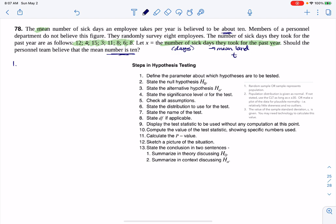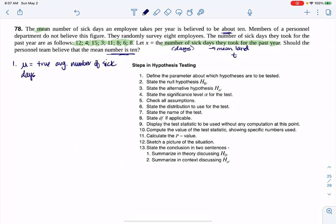I have the 13 steps laid out here. I have the assumptions I need for mean land. Let's start this. My first one is define a parameter. I'm in mean land, so I'm going to do mu. This is going to be the true average number of sick days an employee takes in a given year.